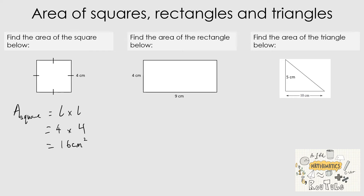Moving on to the area of the rectangle, we have been given two measurements: length and width. Your length is always the longer side. We always start with the formula — area of a rectangle is equal to l times w. The length is 9 and the width is 4. Therefore, 9 times 4 is 36. Include your units and make it squared because we are calculating area.